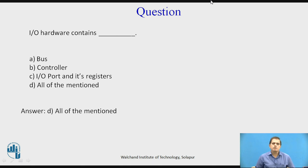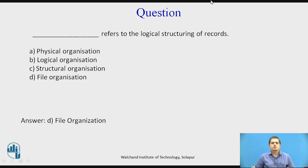Now after studying all these things related to IO management, here are some questions to answer. Question one: Input-output hardware contains — A) bus, B) controller, C) IO port and its registers, D) all of the mentioned. The answer is D, all of the mentioned. Question two: Dash refers to the logical structure of the records — A) physical organization, B) logical organization, C) structure organization, D) file organization. The answer is D, file organization refers to the logical structure of the records. This topic is very important from a conceptual point of view regarding IO management.